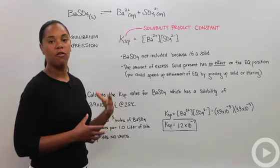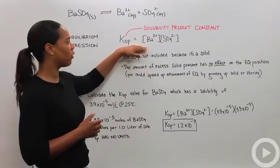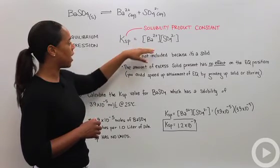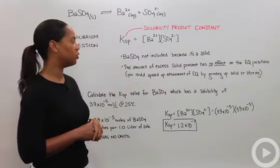But remember that solids are not included in the equilibrium expression. Therefore, BaSO4 is omitted, meaning KSP is only dependent on the concentration of barium ions and sulfate ions in solution.